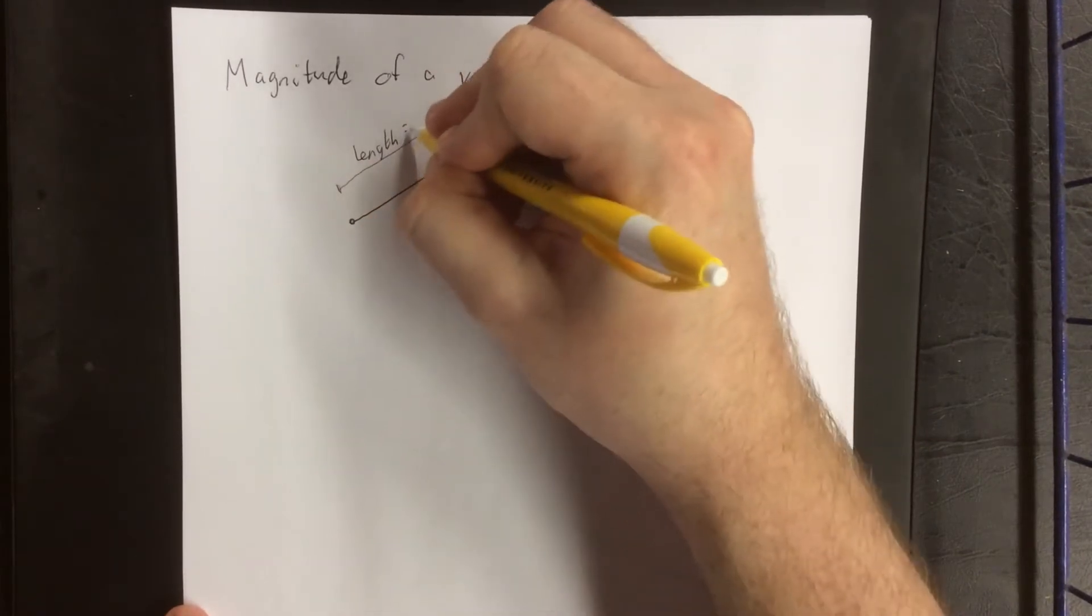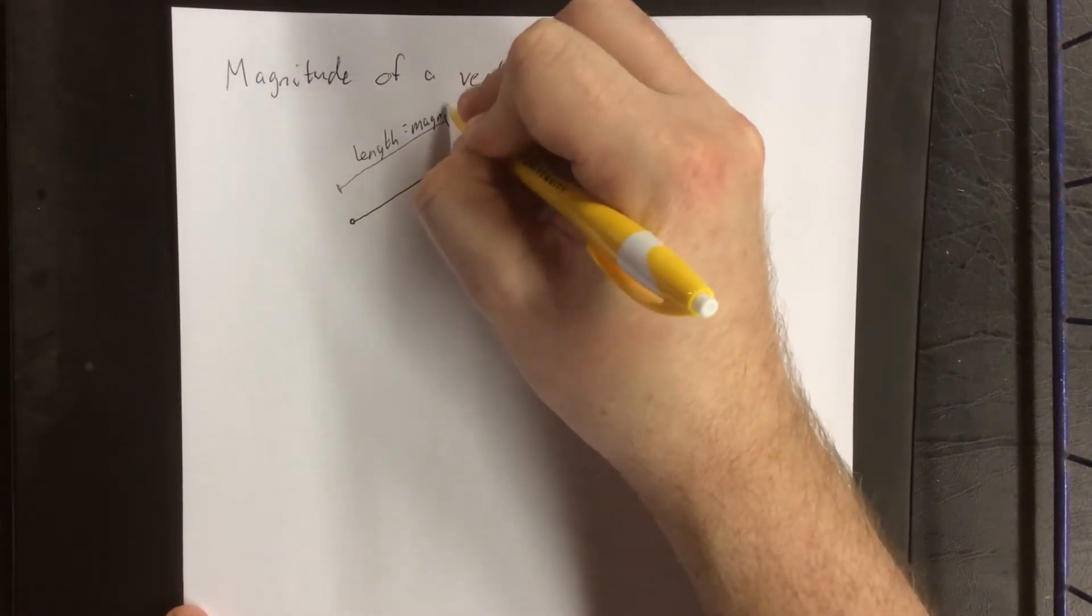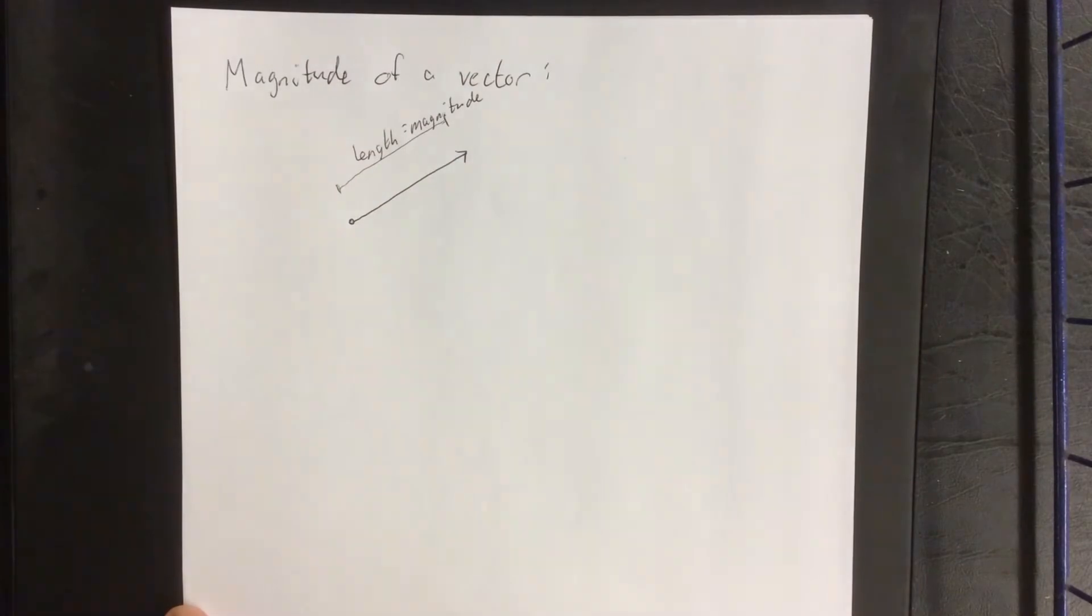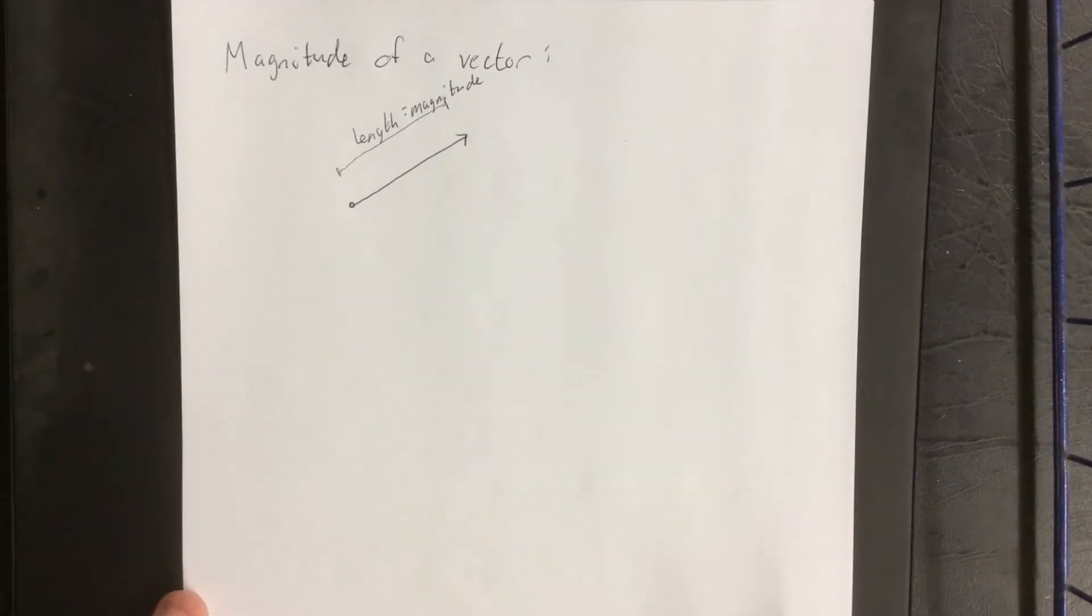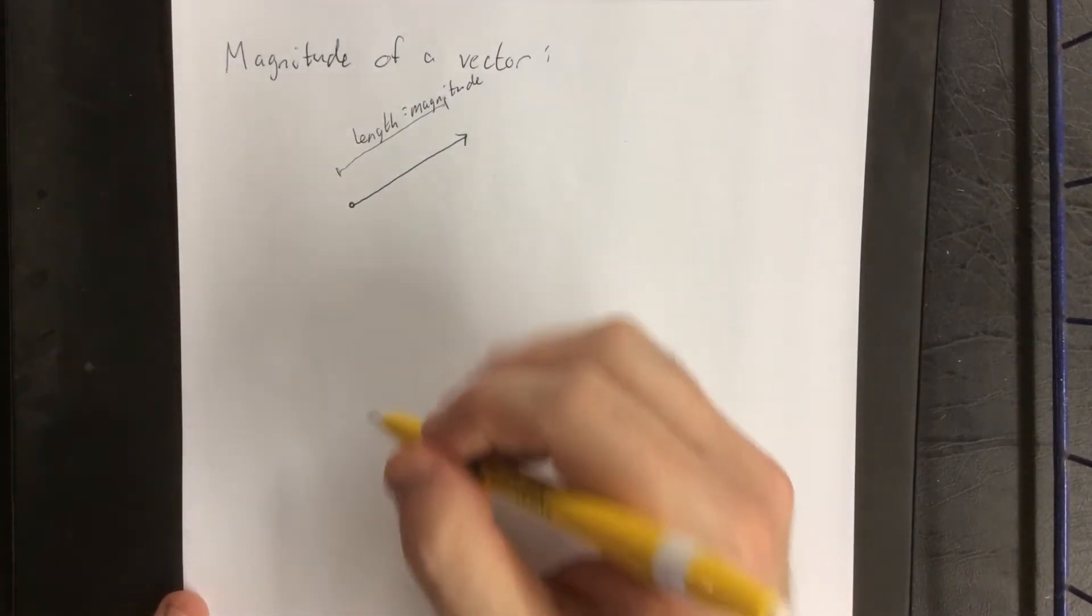The length equals the magnitude. The notation we use for the magnitude of a vector looks like a pair of absolute value brackets.